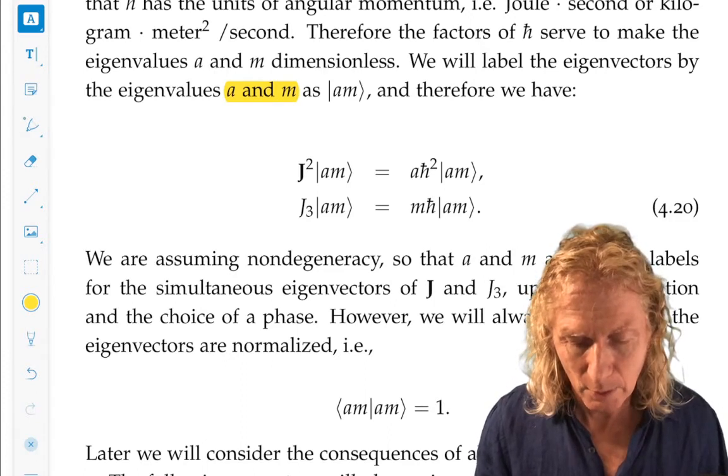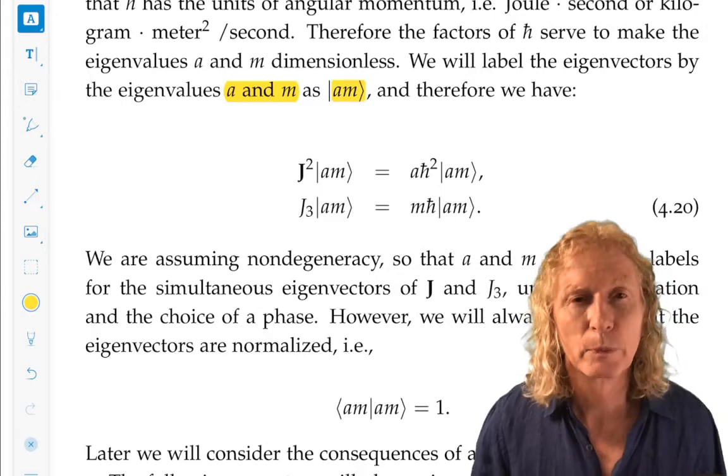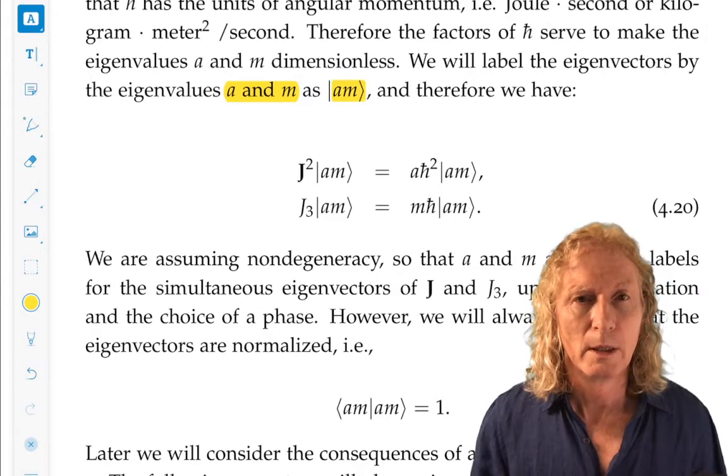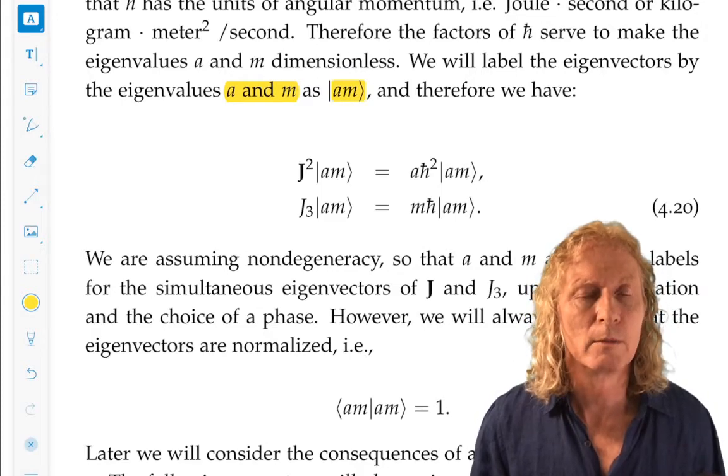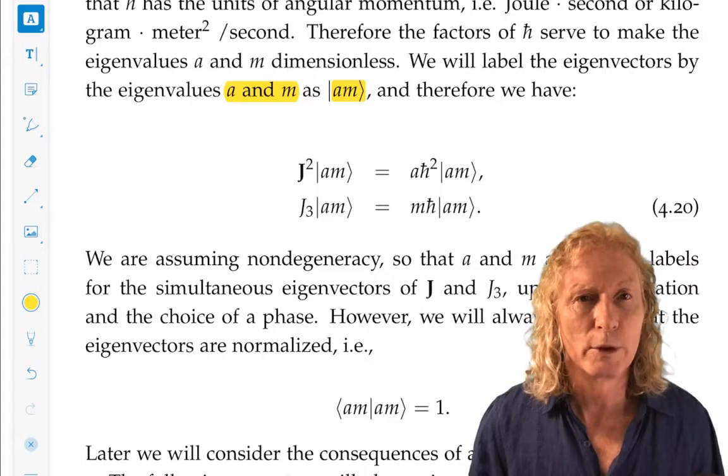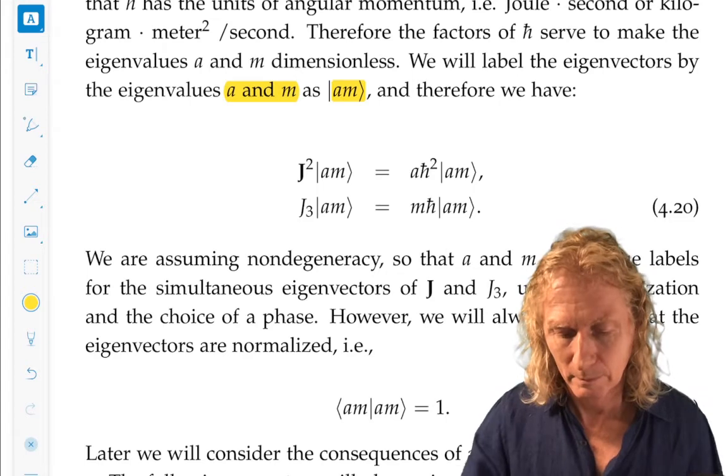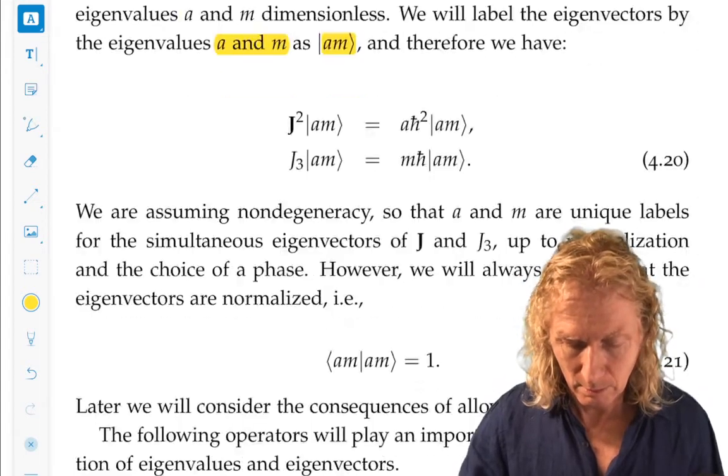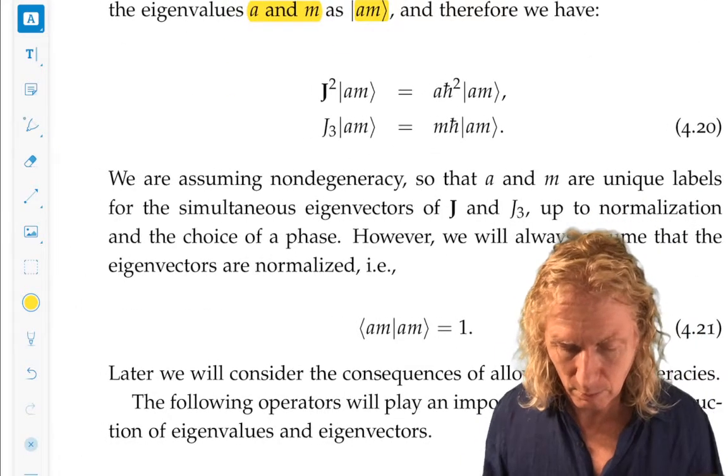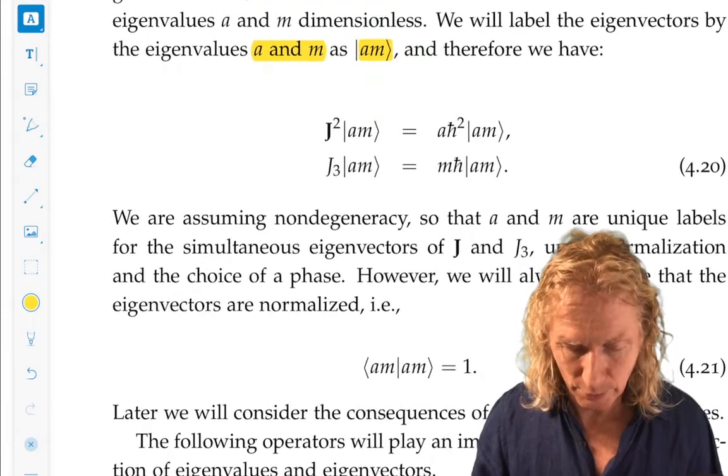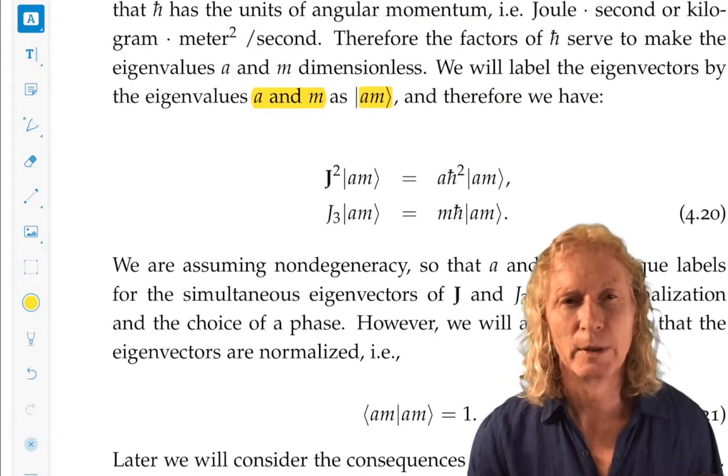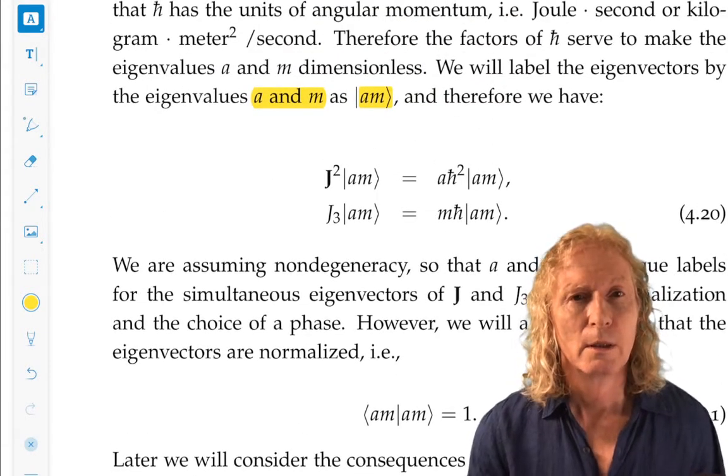We're going to denote them by ket a m with an a and an m, denoting eigenvector for j squared and eigenvector for j3. Now we're going to assume that there are no degeneracies.